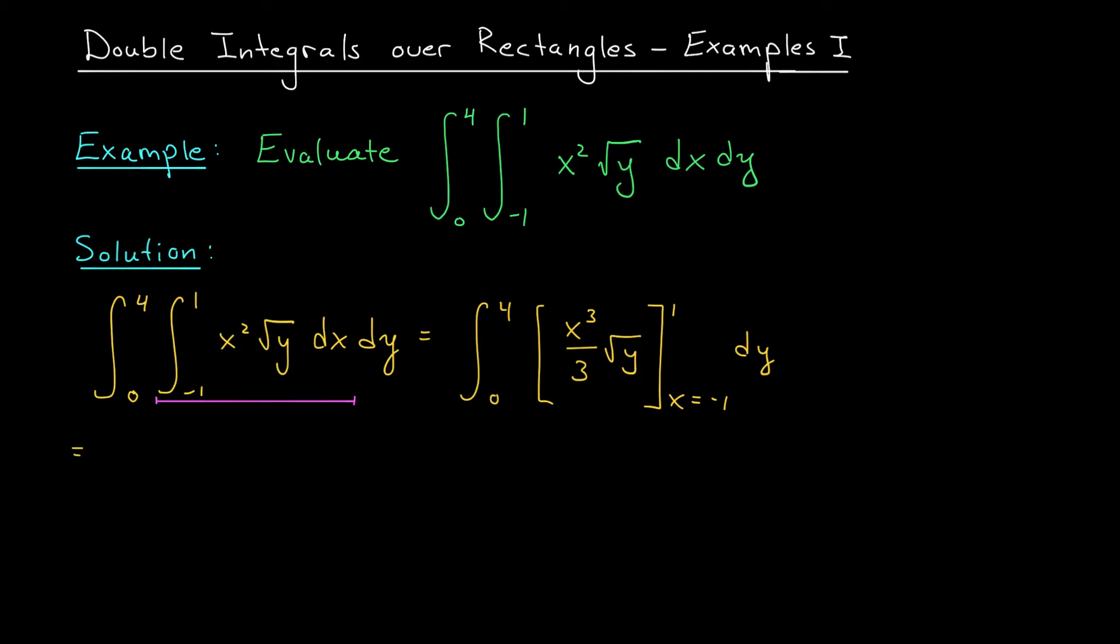Subbing in these bounds for x, we get the integral from 0 to 4 of 1 cubed over 3 root y, minus minus 1 cubed over 3 root y, dy. And after simplification, we have the integral from 0 to 4 of 2 thirds root y, dy.